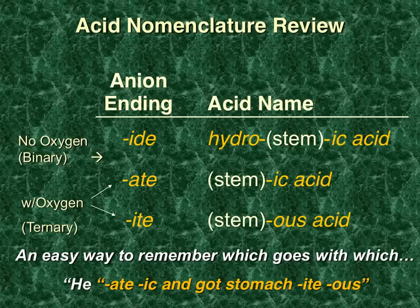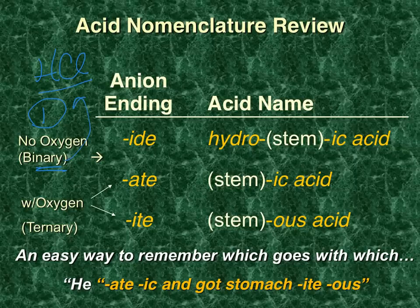There are two types of acids. The first is what we call a binary acid. Binary means two parts to it. Let's look at hydrogen chloride as an example — that's a binary acid because it has only two types of elements.